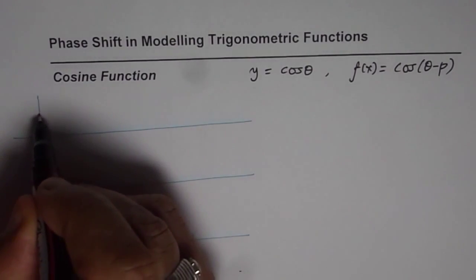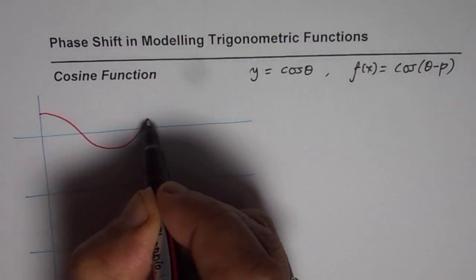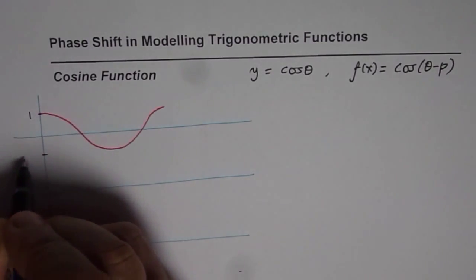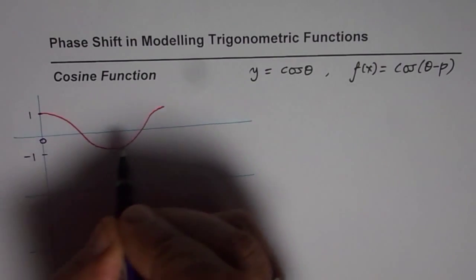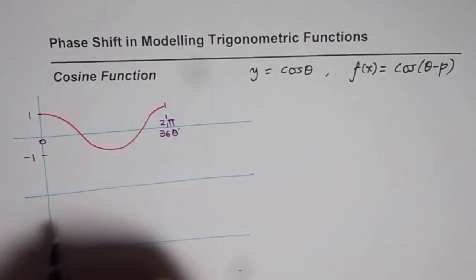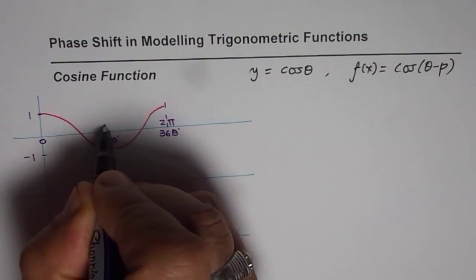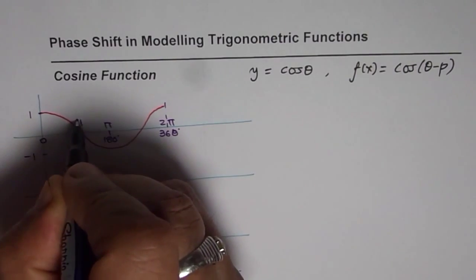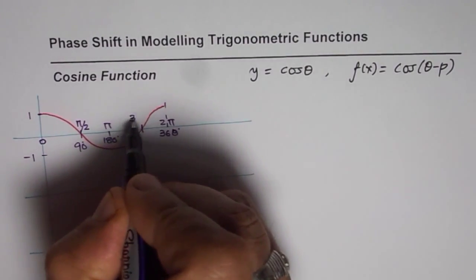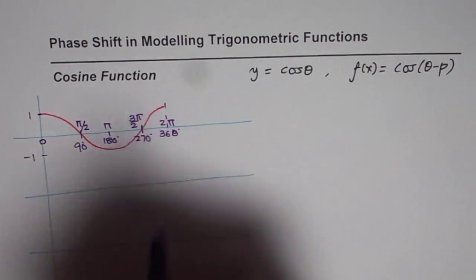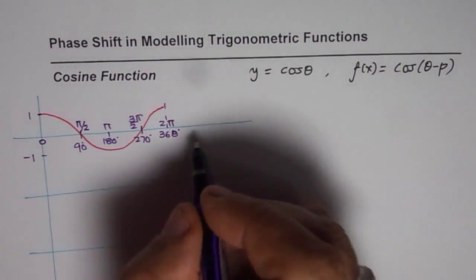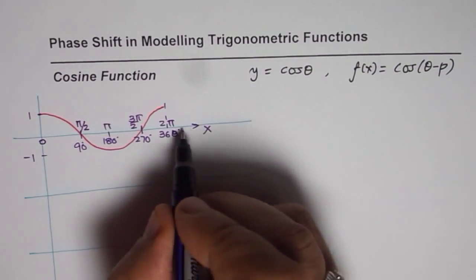As you know, cosine waves start with the maximum, so normally you could sketch a cosine wave like this. I will incorporate both radians and degrees in my discussion. This is maximum and that is the minimum value of minus 1 for the cosine wave. The time period is from 0 to 360 degrees, or you could say 0 to 2 pi. Half of the cycle will be at 180 degrees or pi, a quarter at pi by 2 or 90 degrees, and three-fourths at 3 pi by 2 or 270 degrees. So the equation of this cosine wave is y equals cos theta, where theta is along the x-axis.